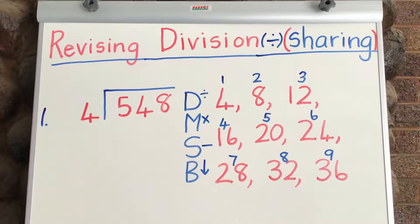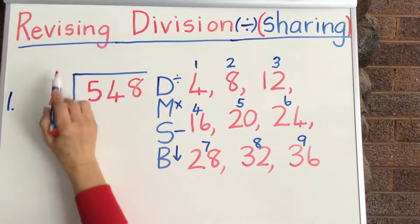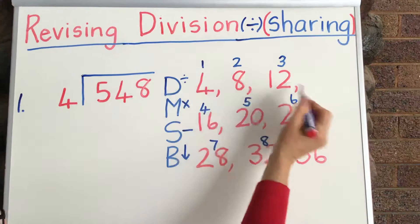So the first sum we're going to do is 548 divided by 4. Now remember this is our sharing sign or our divide sign. Whenever you see that, you're going to use the box.